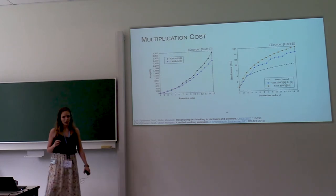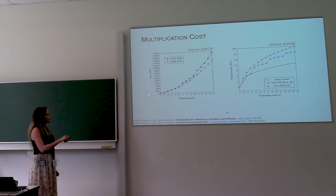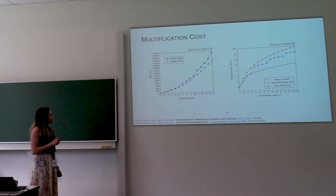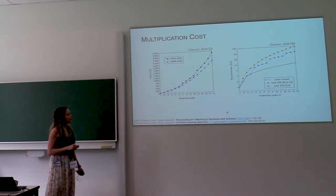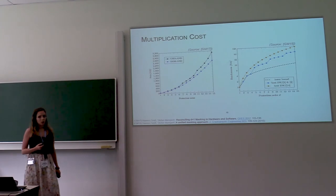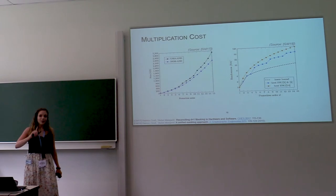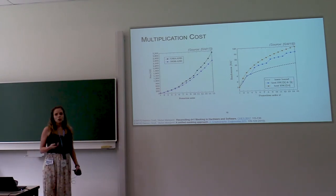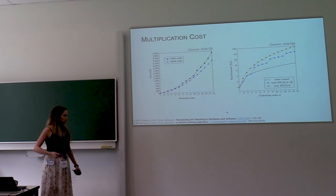If you look at the cost for increasing security order, then you get very scary graphs. So the size of your circuit increases exponentially with the protection order against statistical analysis. Also, randomness is a very important cost factor and you see that it increases a lot with the protection order as well. And keep in mind that this is only the randomness you need for AND gates.